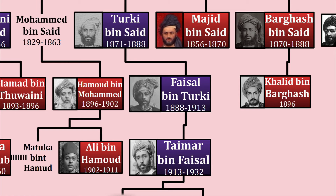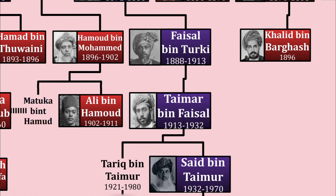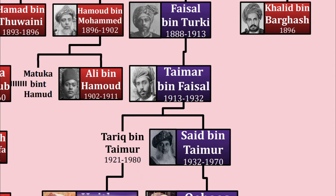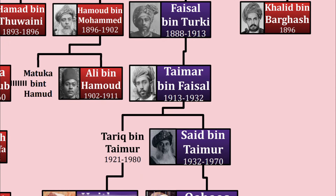Eventually, in 1913, his son took the throne — Taimur bin Faisal — and he was finally able to settle these disputes by 1920. The Treaty of Seeb finally set aside differences between the Sultan of Muscat, as it was called at this point, and the Omani Imamate, at least temporarily.